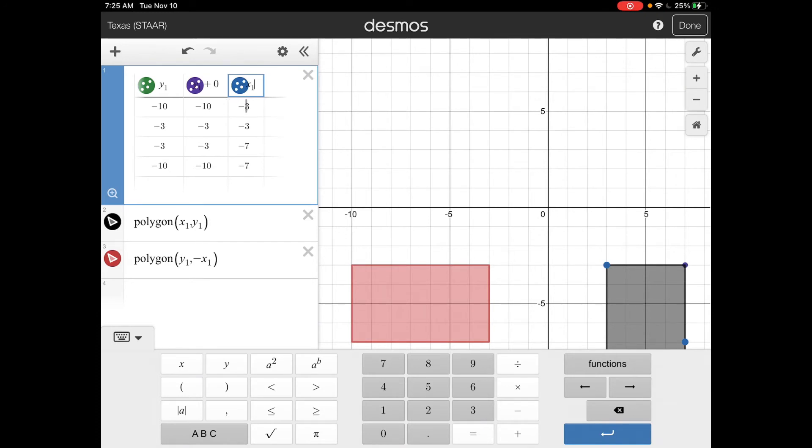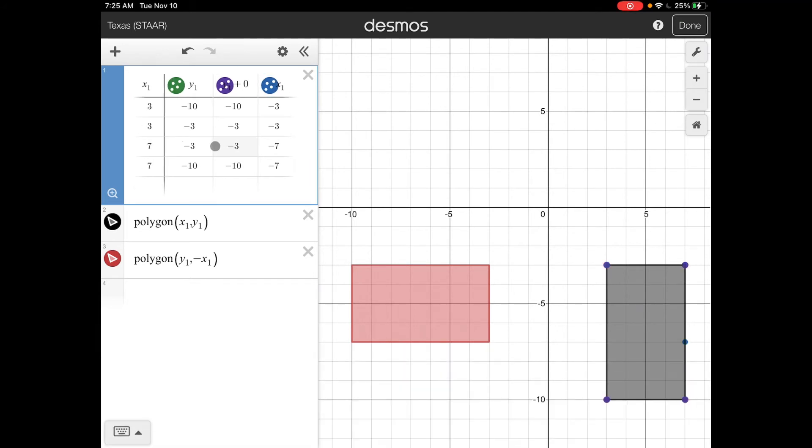Okay, so I've got (-10, -3), so if I look, negative 10 down 3, that's that first point. Okay, (-3, -3), so to the left 3 down 3. (-3, -7), so negative 3 down 7, that's what this line says. And then (-10, -7). So you see how when we make these new columns, it goes ahead and gives us those ordered pairs as well.